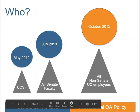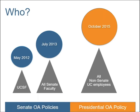We have three open access policies: the UCSF, San Francisco Academic Senate, and Systemwide Academic Senate open access policies, which cover academic senate faculty across the UC and their scholarly articles. They were passed in 2002 and 2013. Following on was the UC presidential open access policy, which was adopted in 2015, covering all UC employees.